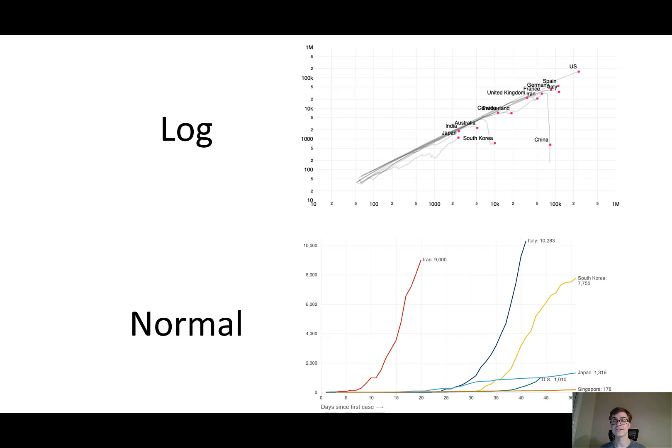So the log graph looks like a straight line, and it gives us a lot of detail everywhere. The normal graph looks like an exponential curve, and it only gives us detail at the big numbers, not at the small numbers. So I hope that was helpful.